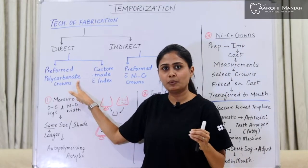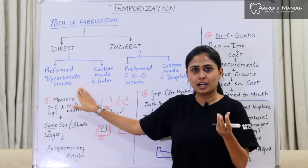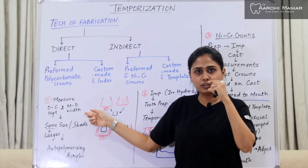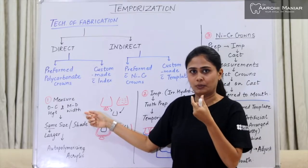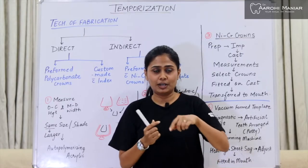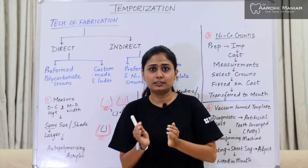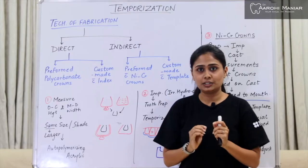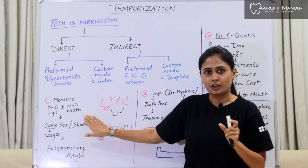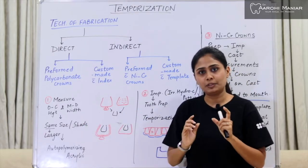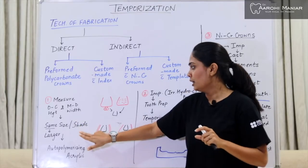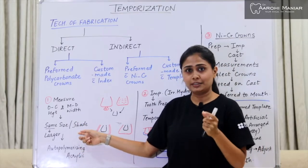In direct technique, the first method is the preformed polycarbonate crown. First, we measure the occlusal-cervical height and the mesiodistal width of the crown before the tooth is prepared. The patient has come in, you need to prepare the crown — grind the tooth from all sides — but before touching the tooth, take those measurements first. Once we have the dimensions, we select a polycarbonate crown of the same size and shade.